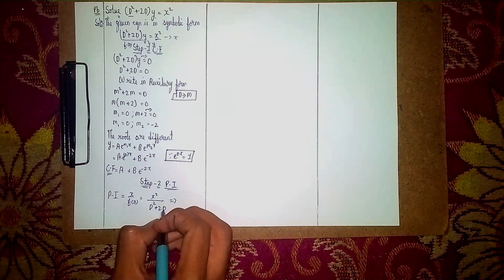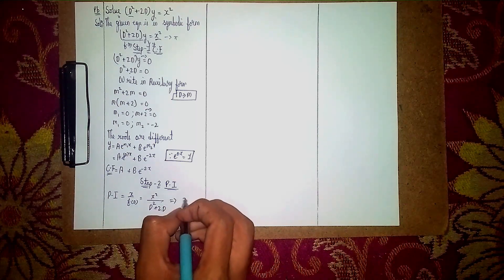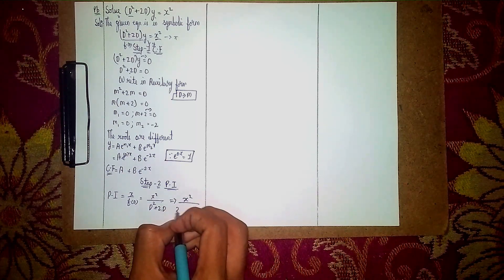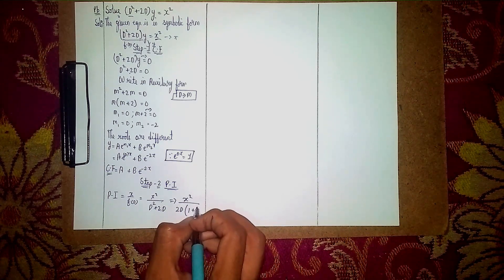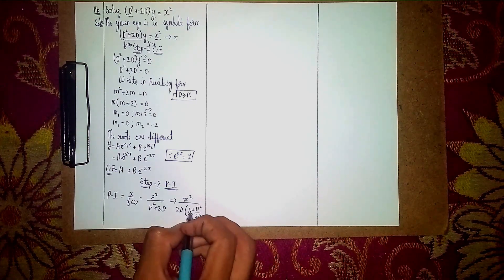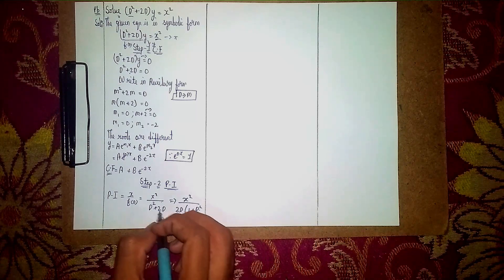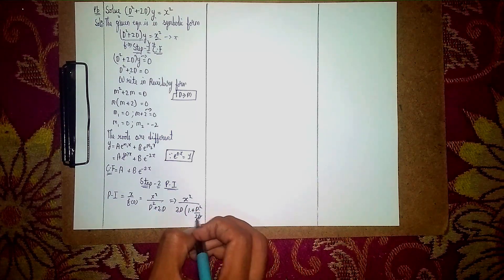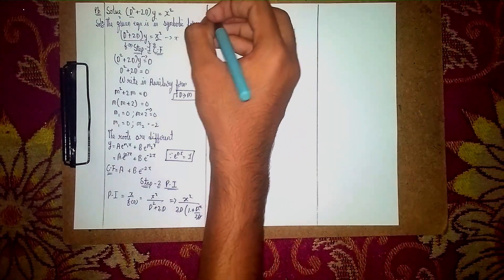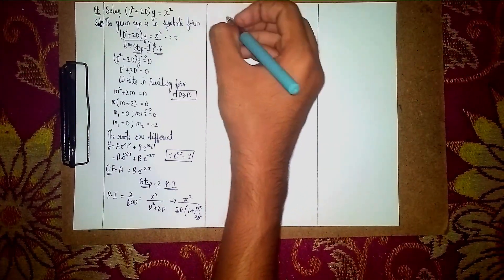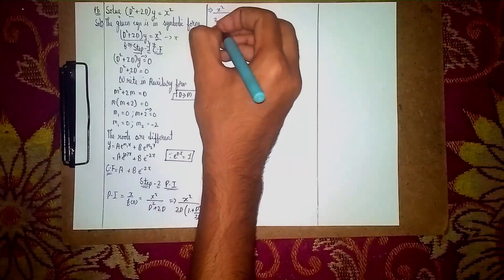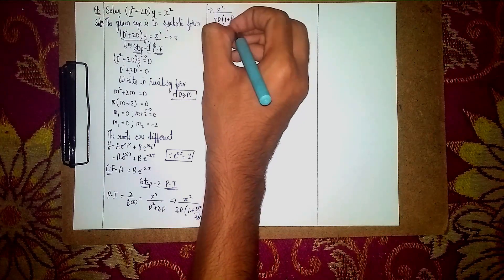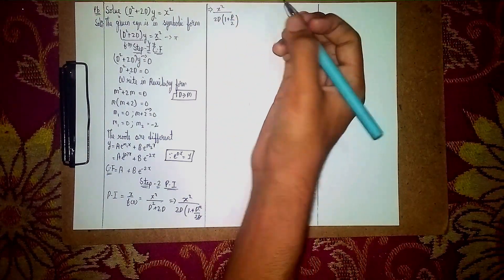Now take 2D outside: multiply and divide by 2D. It becomes x² / [2D · (1 + D²/2D)], which simplifies to x² / [2D · (1 + D/2)]. This is our working form for the particular integral.